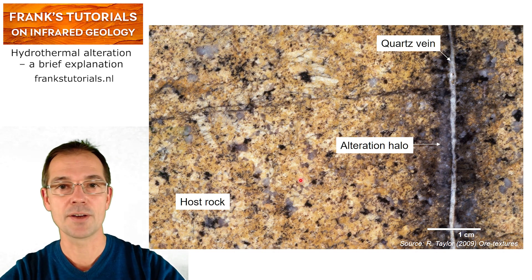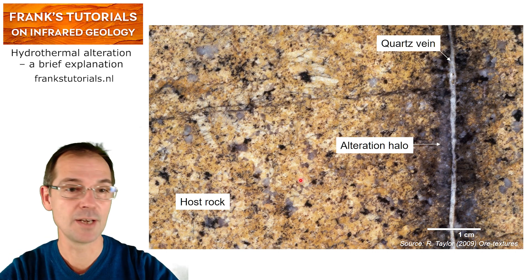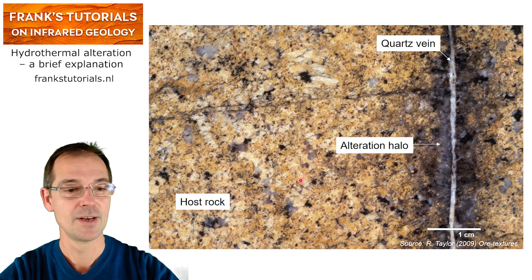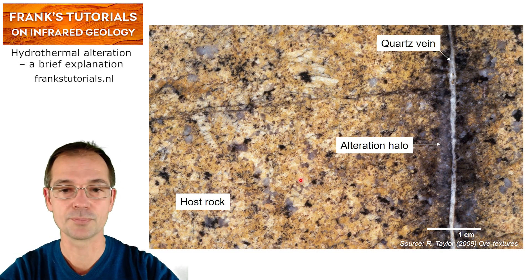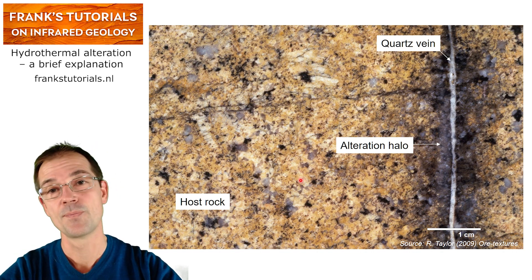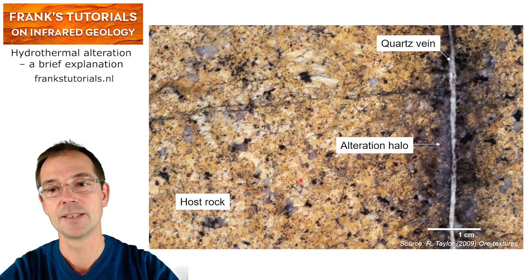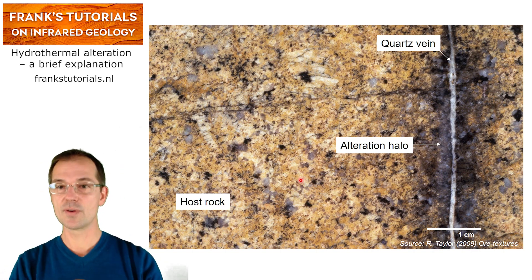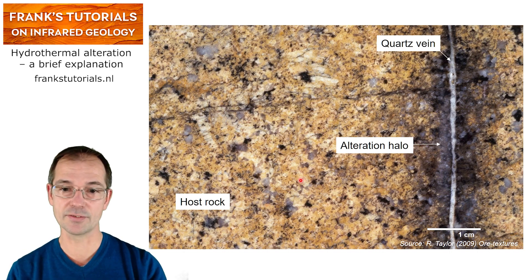What we can see here are three important components that can often be seen in rocks that are hydrothermally altered. First of all, we need a host rock. The host rock is unaltered in principle and contains primary minerals. Then there is often a fluid pathway, in this case represented by a quartz vein, which is a fracture filled by quartz. And there is an alteration halo that we can see as this grayish buff-colored zone that extends from the fracture itself into the host rock.